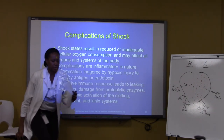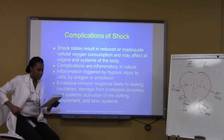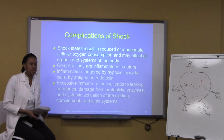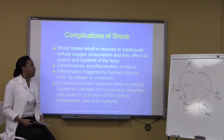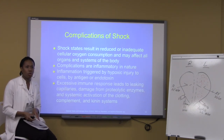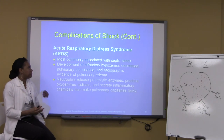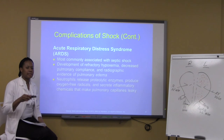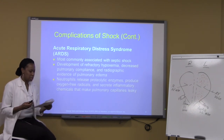The last thing to cover in Chapter 20 is complications of shock. Patients who go through a state of shock can have complications leading to organ failures and other issues. One example is ARDS — acute respiratory distress syndrome — which we will discuss again when we cover the respiratory system. ARDS is most commonly associated with septic shock.